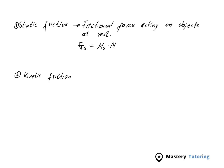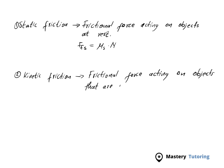The second type is kinetic friction — frictional force for objects that are in motion. The formula is FF_K, where K stands for kinetic, so FF_K equals mu_K times N. As we can see, in both cases the formula is mu times N, but the mu has either an S for static or a K for kinetic.